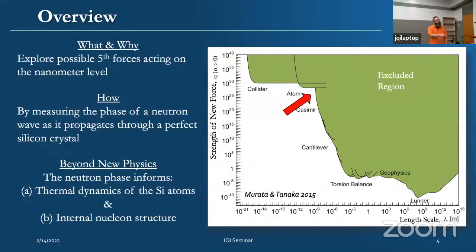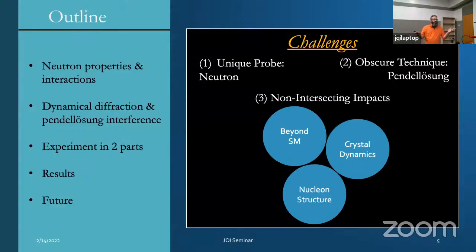What we would like to do is use neutron interacting with a crystal lattice, specifically silicon, to explore the region on the nanometer scale. The great thing about this technique is it's not just a one-off show. It gives you stuff beyond the new physics aspect. It informs you of what the silicon atoms are doing within the lattice, how they're vibrating, and how strongly they thermally vibrate. It actually informs you on what's happening in the internal structure of the nucleon as well.